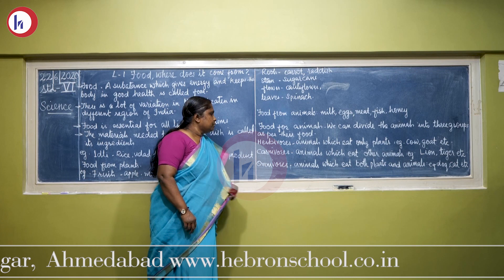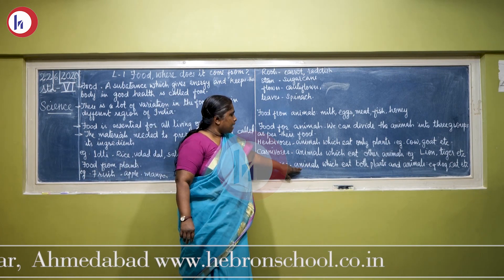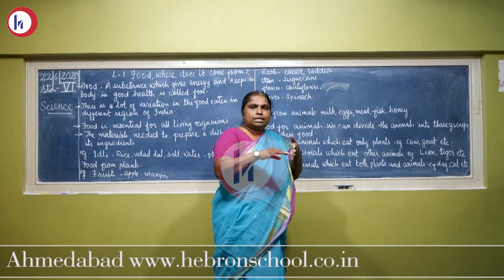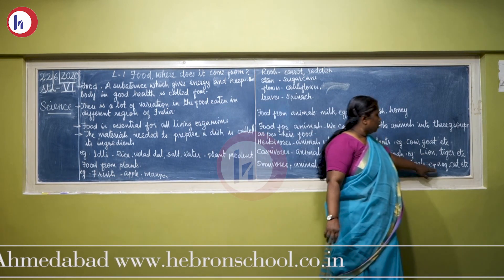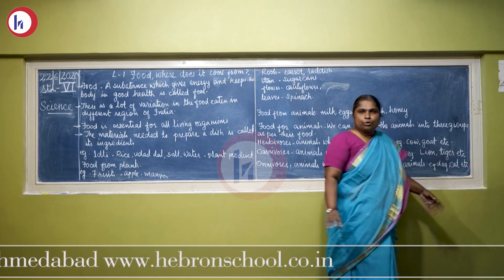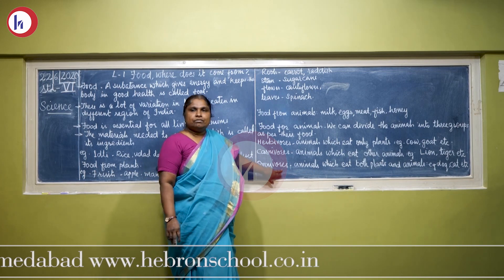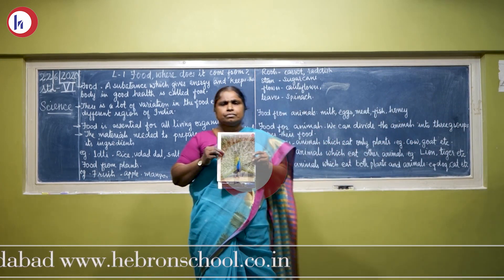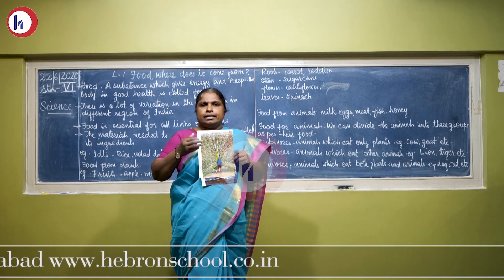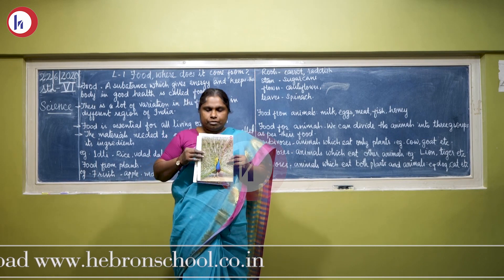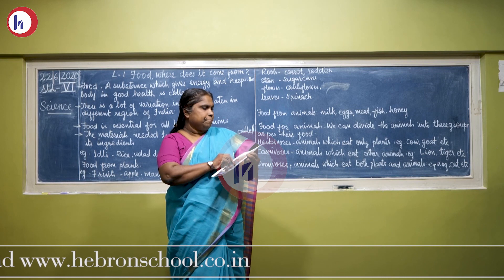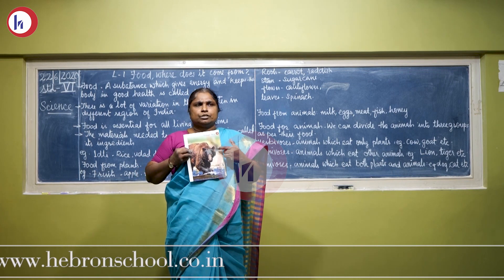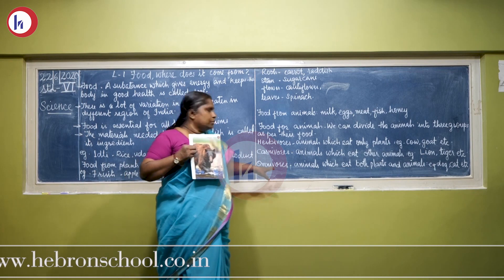The third group is omnivores. Omnivore animals are animals which eat both plants and animals — they eat plant parts and also eat other animals. Examples: dog, cat, etc. We human beings are also included in the omnivore group. Here, the peacock eats grains and also eats snakes and other insects, so it is an omnivore animal. The bear also eats both plant products and animals, so it is also included in the omnivore group.